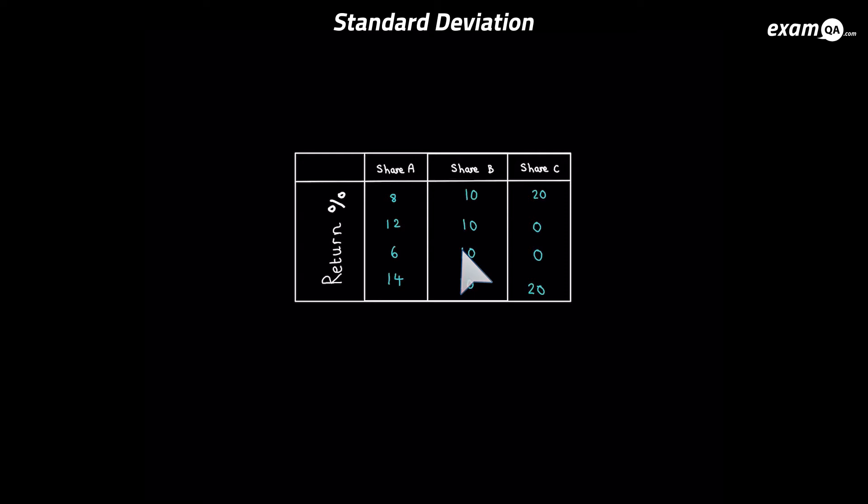For example with share B you can see it gave a 10% return every single time. But with share A and share C it differs now and again. So I want you to choose which share would you put your money into.